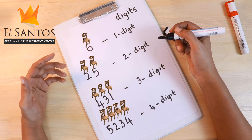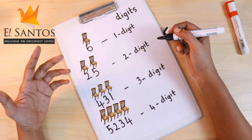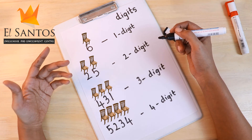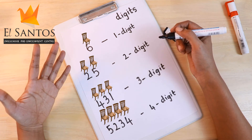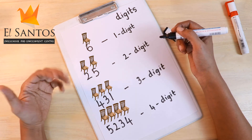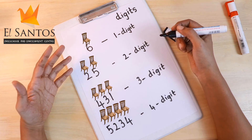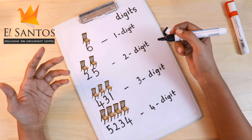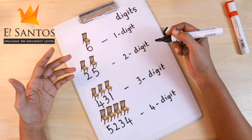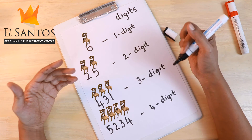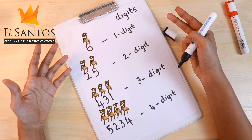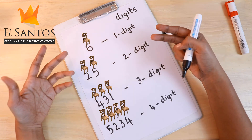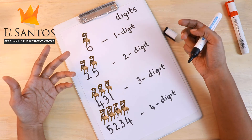Similarly, if there are five places in a number, it would be called a five digit number. If there are six places in a number, it would be called a six digit number. And if there are seven places in a number, it would be called a seven digit number.